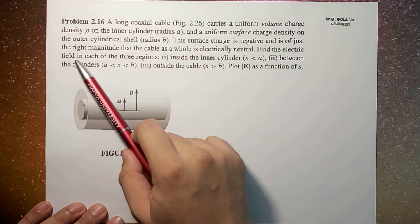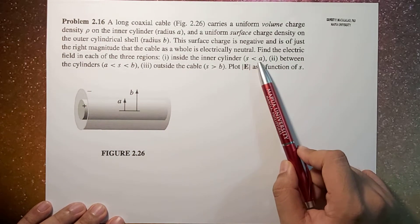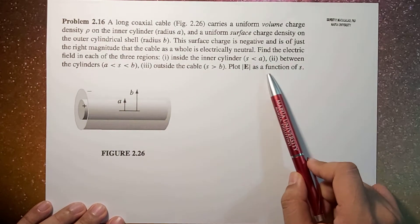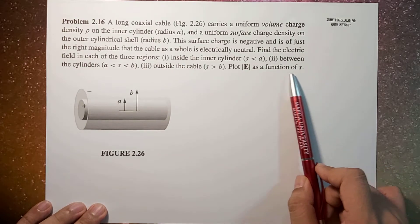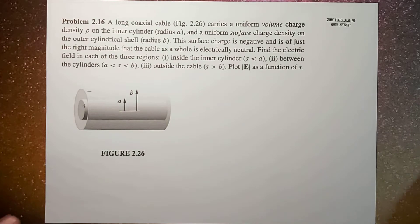Find the electric field in each of the three regions: inside (S less than A), between the cylinders, and outside the cable. Then plot the function of the electric field as a function of S.